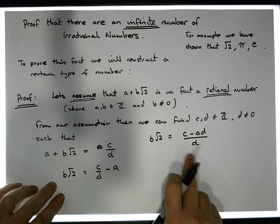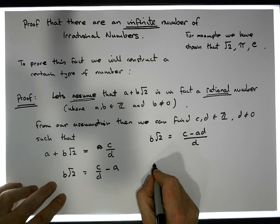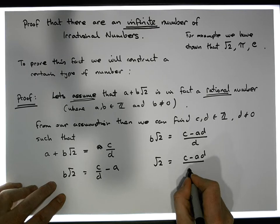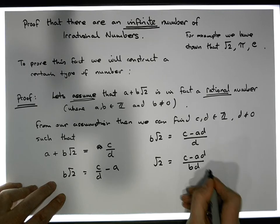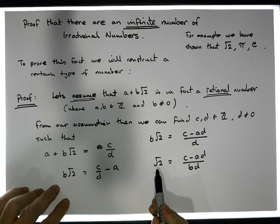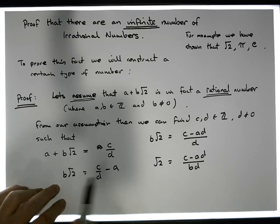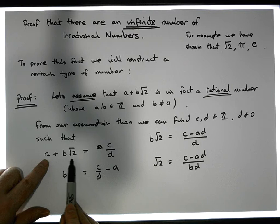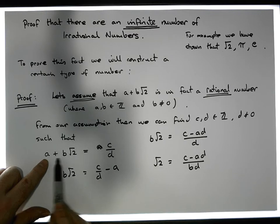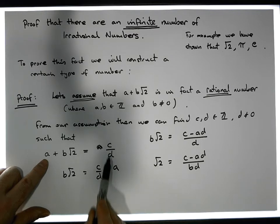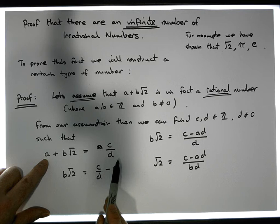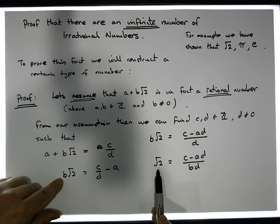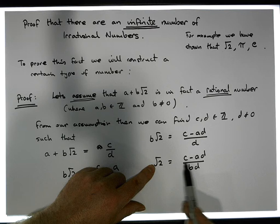Now what does this also tell us about the square root of 2? It says that the square root of 2 must be equal to c minus ad all over b times d. So actually the square root of 2 is equal to this particular number, based off the assumption that a plus b root 2 can be written as a rational number c over d. Through some deduction, we have that the square root of 2 can be written in this particular form here.